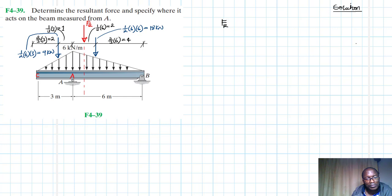So FRA times D is going to be equal to the summation of moments about point A, and then we have summation of forces in the Y going up in our reference, this is equal to FRA.